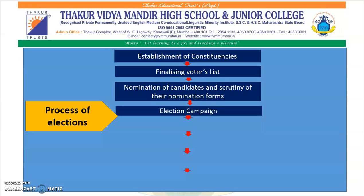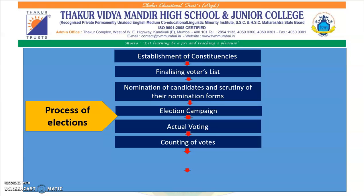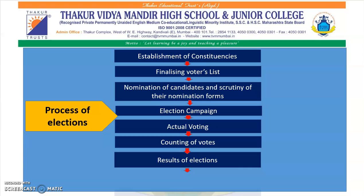Election campaign: all political parties start campaigning before the election. But when they are campaigning, they should follow some rules which is known as the code of conduct. Actual voting: after the campaigning, the actual day of voting comes when people go to the fixed places and cast their vote. After the voting is done, the counting of votes starts and results are declared.